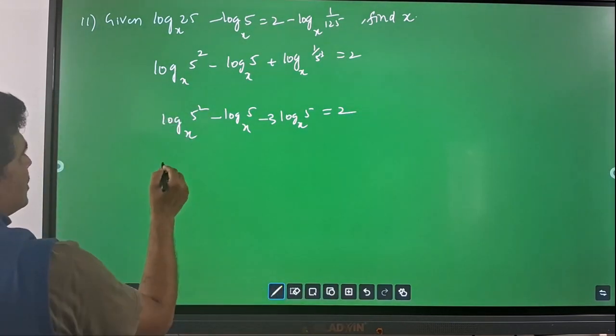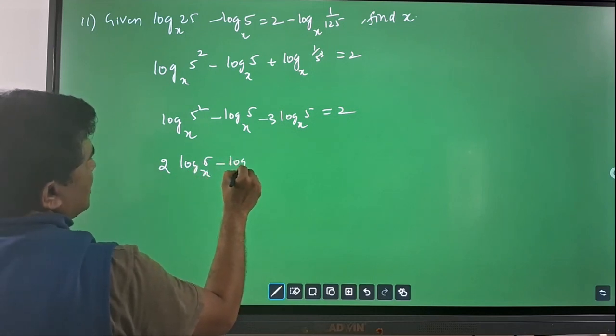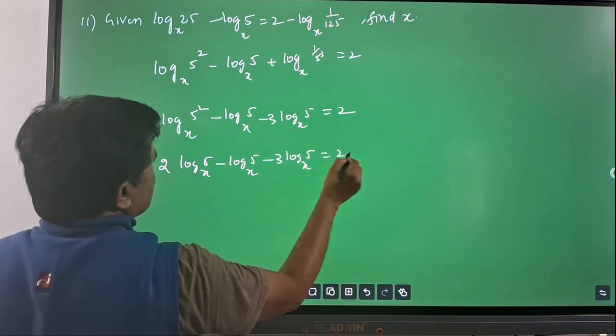You can bring this 2 also front. 2 log 5 with base x minus log 5 with base x minus 3 log 5 with base x, which is equal to 2.